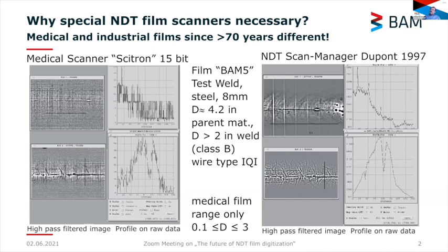The basic difference is the dose response. In medical imaging, the human being is very sensitive to radiation dose, so dose during investigation should be as low as possible. This means the film is not very dark, and a typical medical film density range is between 0 and 3. In NDT, your pipeline has no problem with X-rays, so you can use dose ratios up to 1000 times higher than in medical, giving a much higher signal-to-noise ratio.